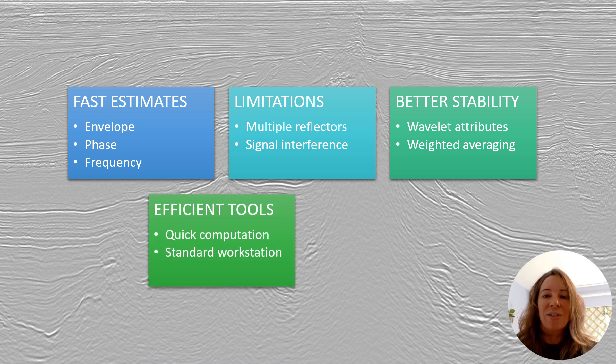One of the most practical advantages is that complex trace attributes are computationally efficient. You don't need that supercomputer. You can calculate them directly on your interpretation workstation without needing specialized processing hardware or extensive computing time.